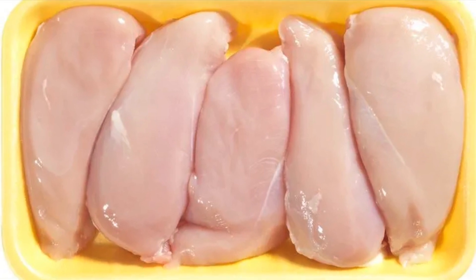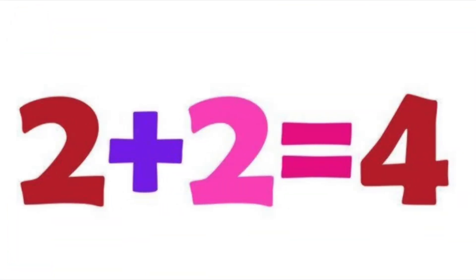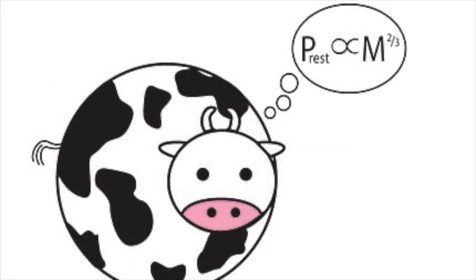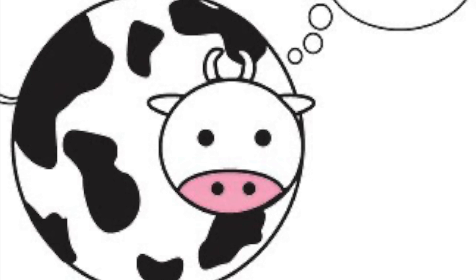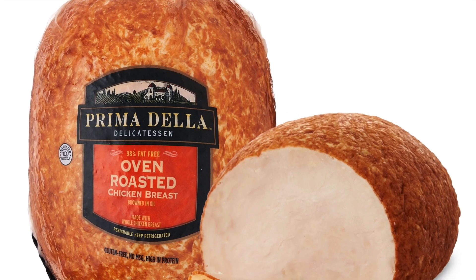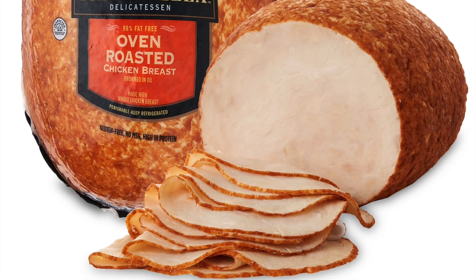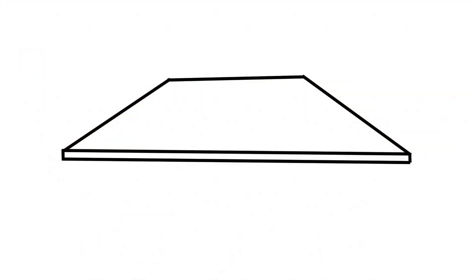Let me preface this by saying that the process we will take to get there is grossly oversimplified. When physicists talk about spherical cows, this is what we mean. Step one, we're going to assume that the chicken we're trying to cook is cut into very thin slices, so it's going to be 10 centimeters by 10 centimeters by one millimeter.